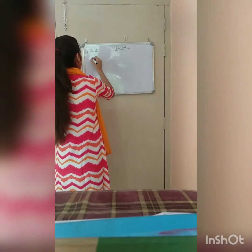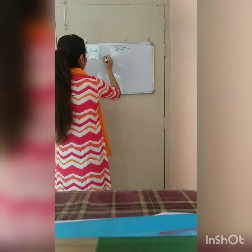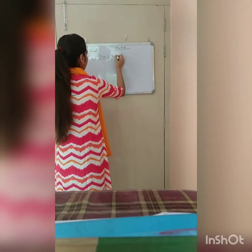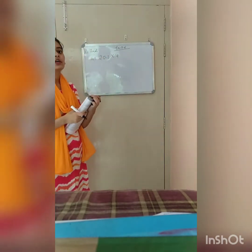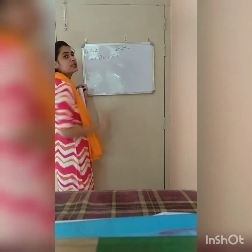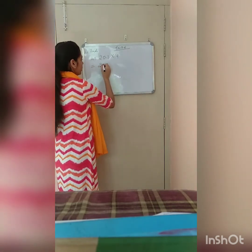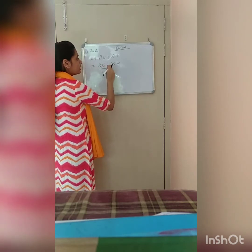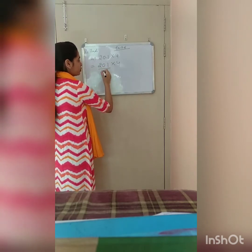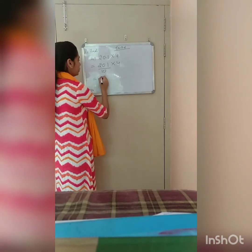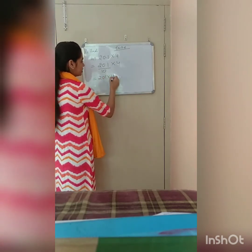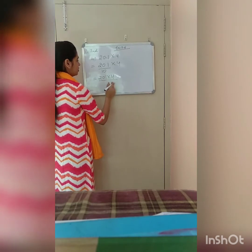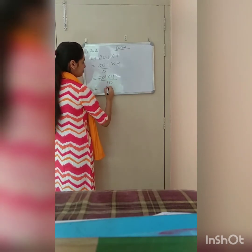Part 4: 20.1 into 4. First we will convert this decimal into a fraction. We will remove the decimal and put 1 in its place. There is 1 digit after the decimal, so we will put 10 in the denominator. Then we will multiply the numerators.